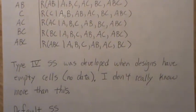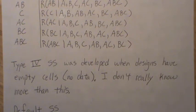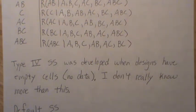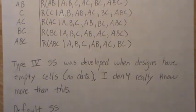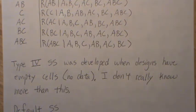Now type 4 sums of squares — you're going to be a little disappointed with me. Type 4 sums of squares was developed when designs have empty cells or no data. I don't really know much more than that; I've never used it and I've never actually studied it. It would be a disservice if I tried to give you more. Maybe one of these days I'll research it, investigate it, and do a video on it.